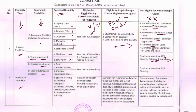For hearing impairment — the specified disability of deaf or hard of hearing — and also for speech and language disability with organic neurological cause, persons eligible for the course are those with less than 40% disability. Those NOT eligible are persons with equal to or more than 40% disability.